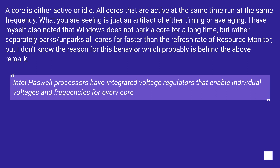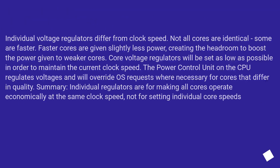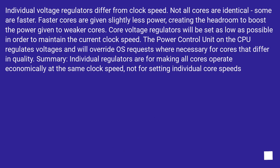Windows does not park a core for a long time, but rather separately parks and unparks all cores far faster than the refresh rate of a resource monitor. Intel Haswell processors have integrated voltage regulators that enable individual voltages and frequencies for every core. Not all cores are identical — some are faster. Faster cores are given slightly less power, creating headroom to boost power given to weaker cores. Core voltage regulators are set as low as possible to maintain the current clock speed. In summary, individual regulators are for making all cores operate economically at the same clock speed, not for setting individual core speeds.